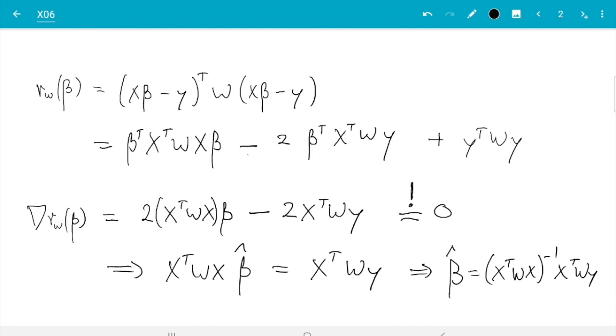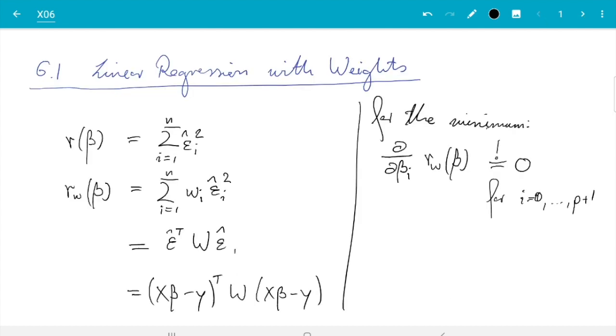So that is how we fit a model with weights. The important thing to keep in mind is that only affects the fitting procedure. So we found now a different regression line which is better where the weights are large, but is worse where the weights are smaller.